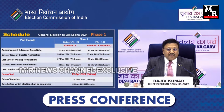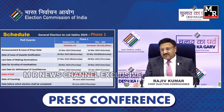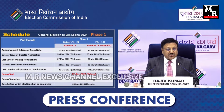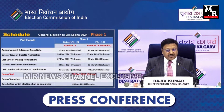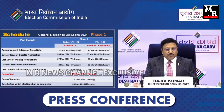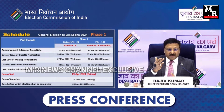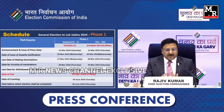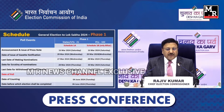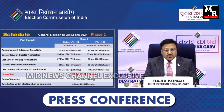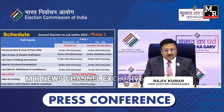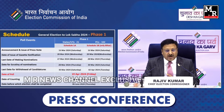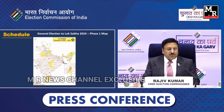Schedule of the Lok Sabha poll. Phase one — we will do it in seven phases, as was done last time. Phase one will start from 20th March notification — five days from now. The last date of withdrawal would be 30th March and date of poll would be 19th April. However, for Bihar in phase one, due to a festival there, the last date of withdrawal will be 2nd April instead of 30th March. Voting on 19th April and counting across the whole country on 4th June. We will provide you this map now.